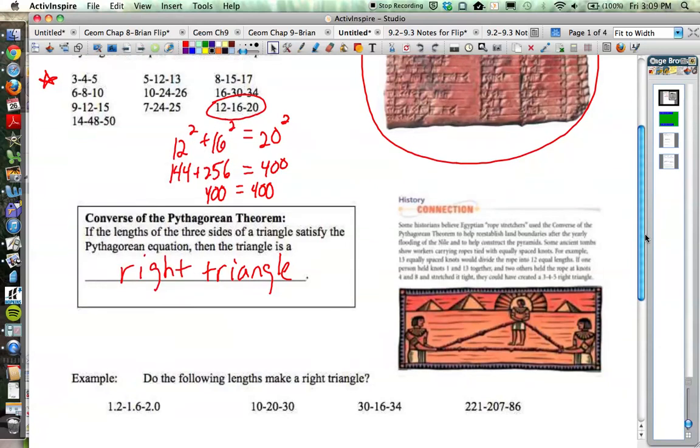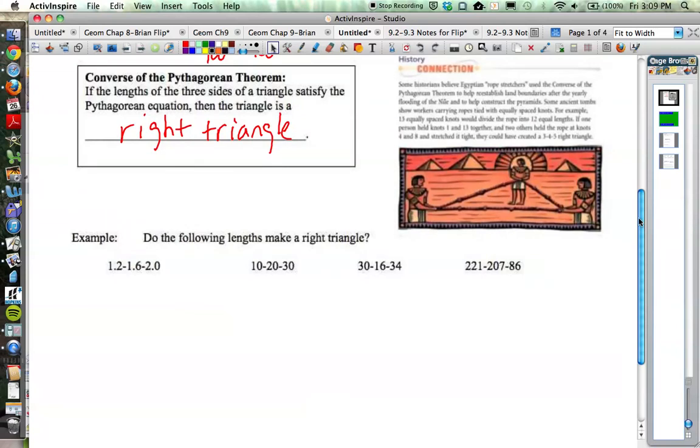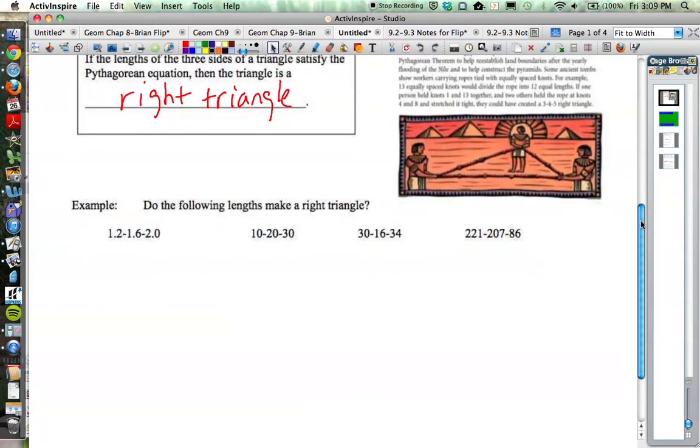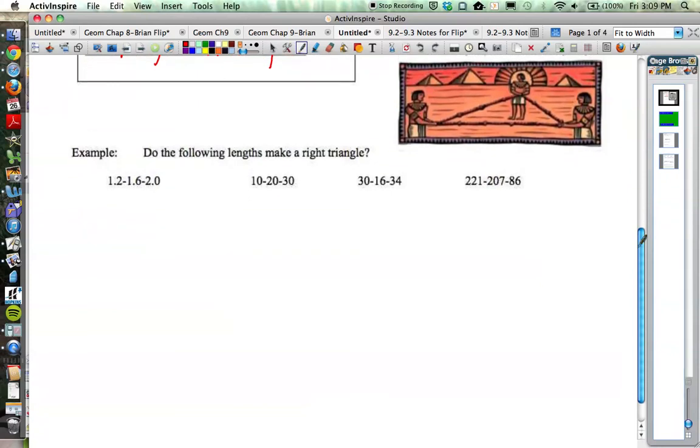So what that means down here - and you can read the little history connection over here about how Pythagorean theorem and right triangles were used to set up borders in Egypt. But down here, the question is: do these lengths make a right triangle? We're going to use the converse of the Pythagorean theorem. If A squared plus B squared equals C squared, then we know it's a right triangle. If it doesn't, then it's not a right triangle.